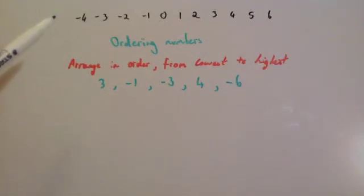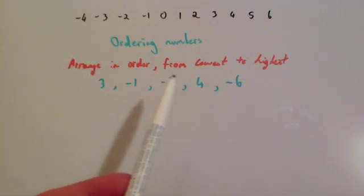In this video we're going to look at how to order numbers that involve negatives. So here's a typical question which says arrange in order from lowest to highest.